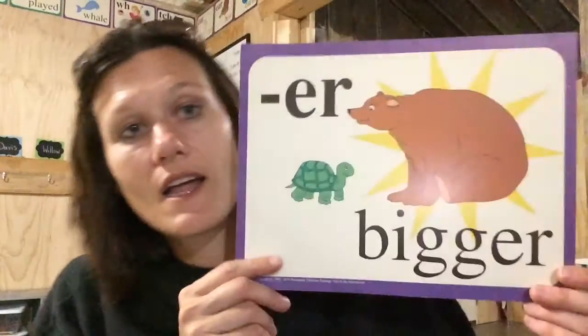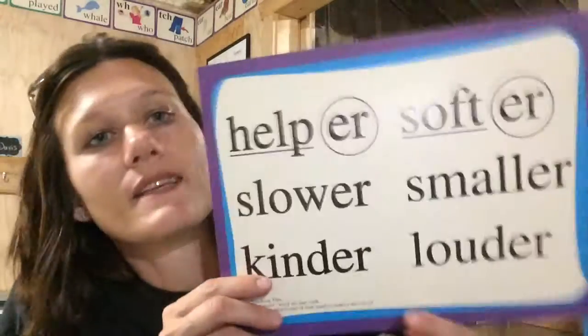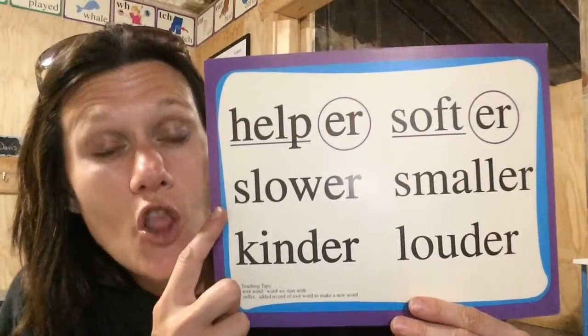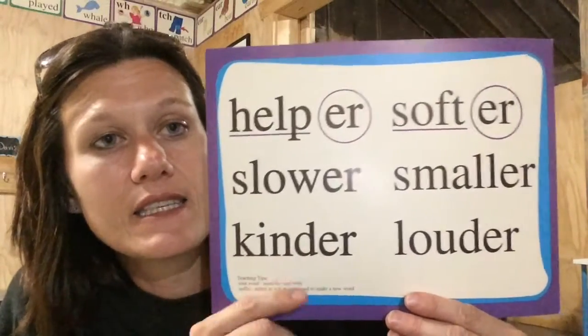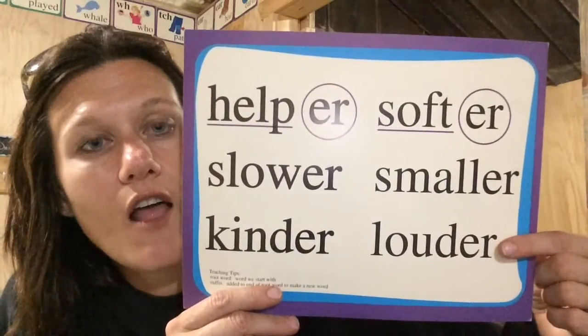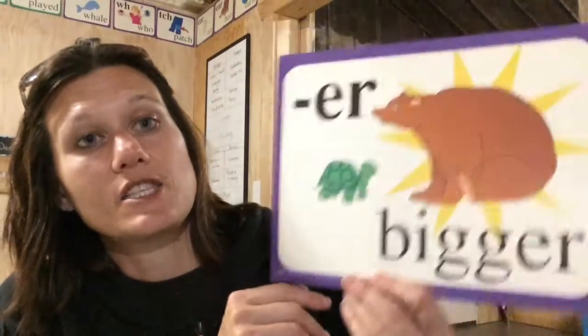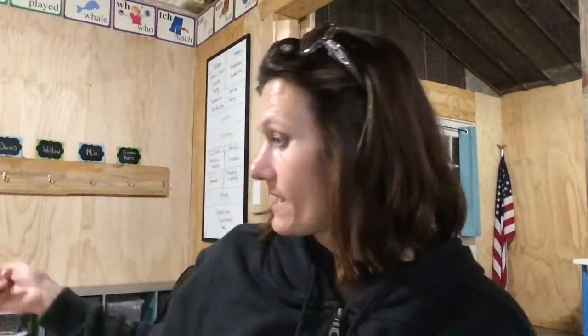Let's look at the next one. It's another suffix — er, like in bigger. This one's a pretty easy one: helper, slower, kinder, softer, smaller, longer. So there is the suffix er in bigger.